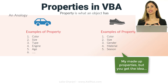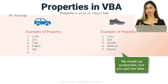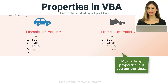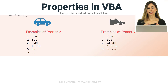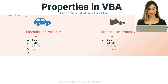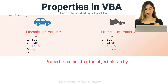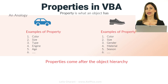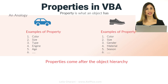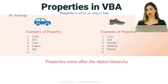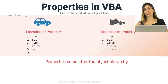So they have these predefined types of properties. The same thing applies to Excel objects — they have a predefined set of properties. It's important to note that properties come after the object hierarchy. In the last lecture, we saw that objects were separated by a dot, so properties come after those dots.